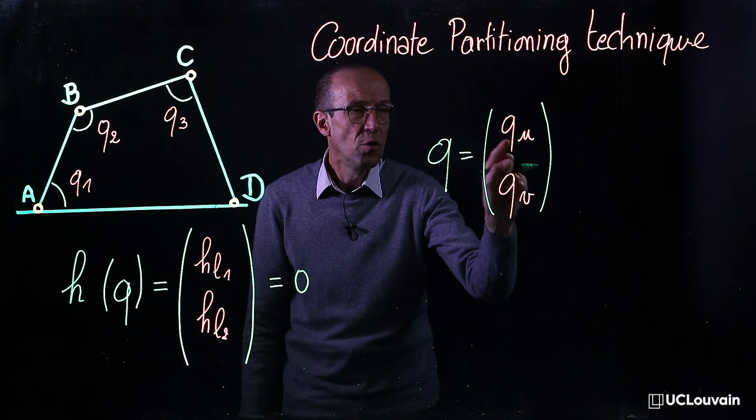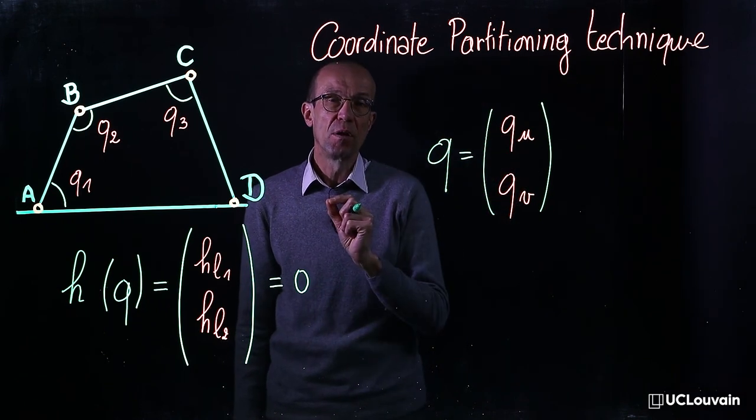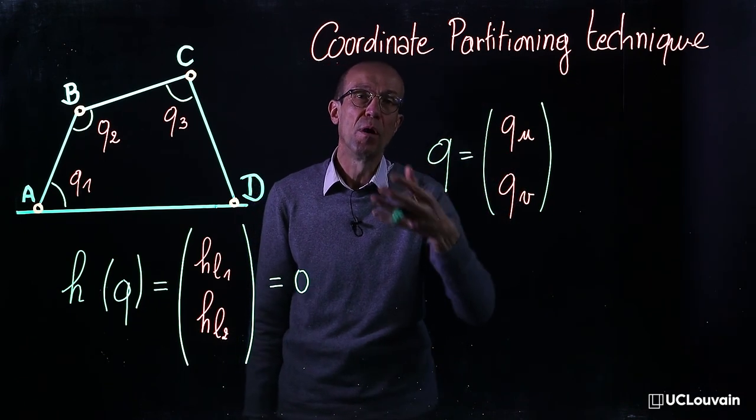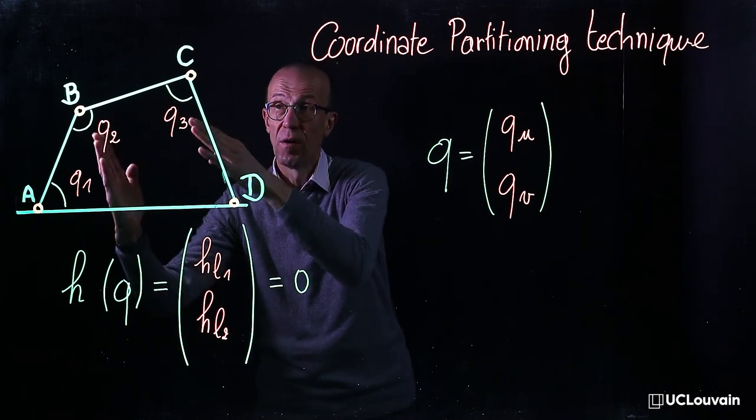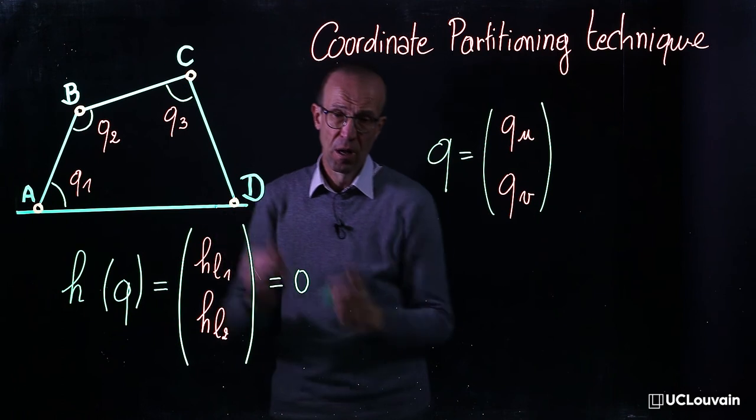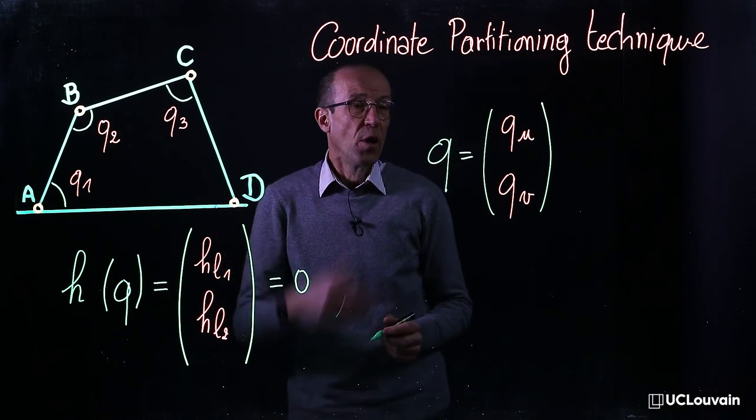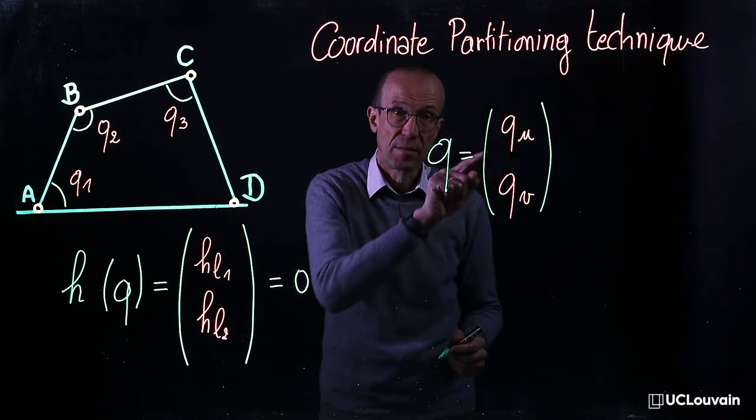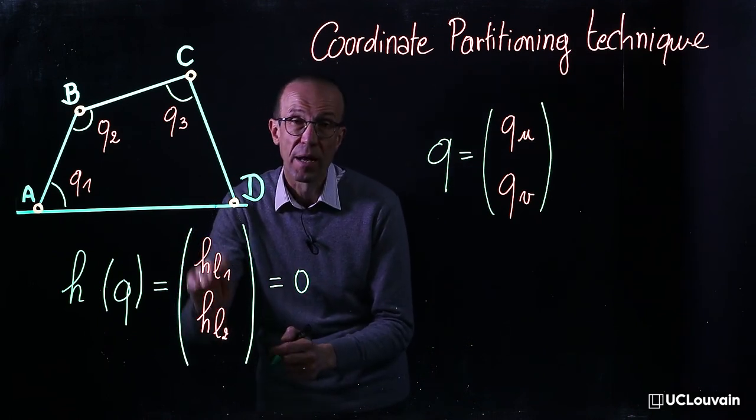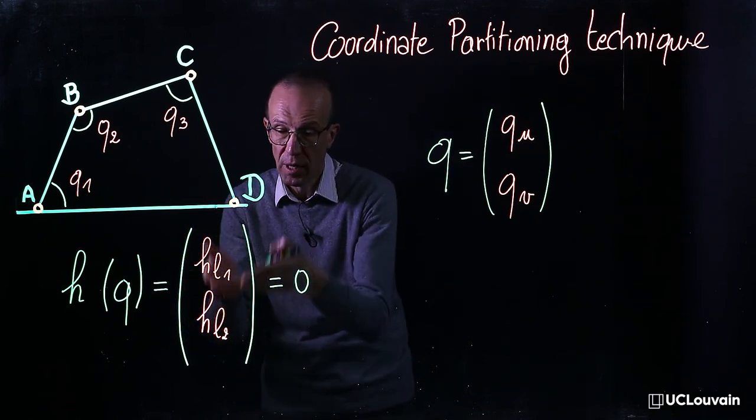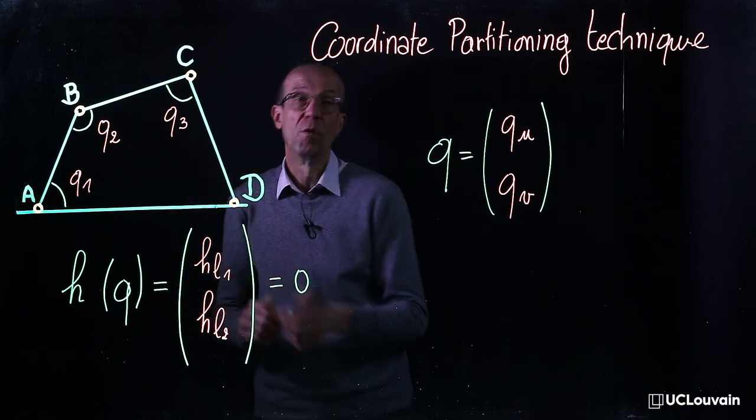for which the global set of generalized coordinates q is split into independent coordinates qu and dependent coordinates qv. The number of qu will be exactly equal to the number of degrees of freedom of the multibody system, one in the case of the four-bar mechanism, while the number of qv will be exactly equal to the number of independent constraints applied to the system, two in the case of the four-bar mechanism.